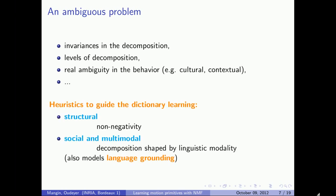Thus, we are going to use heuristics to guide the dictionary learning and try to overcome this ambiguity. The first heuristic is non-negativity: simple gestures can be present, not present, or more or less present in each choreography, but we don't want simple gestures to be negatively present. We are also going to use a linguistic modality to guide the learning — we will learn jointly from a demonstration of a motion and a linguistic description of that motion. Making learning happen in such a multimodal space can also be seen as modeling the language grounding problem.